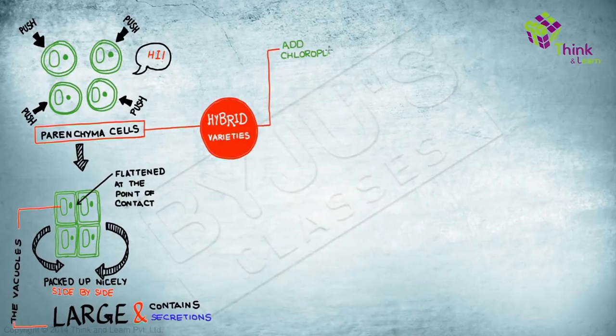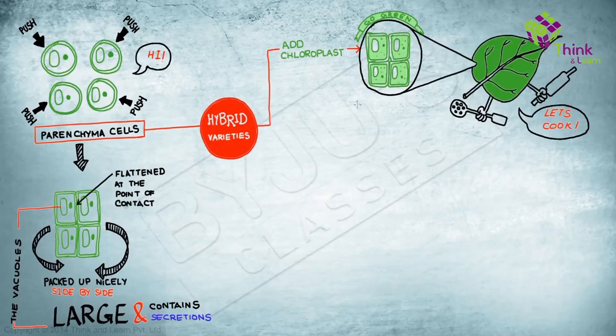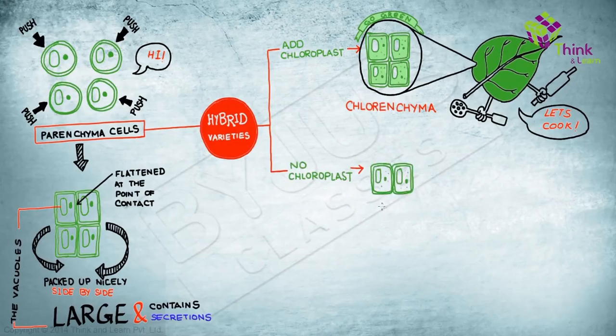Pop a chloroplast into them, not only will it give a nice green color to the cell, but even more importantly, the cell can now carry out the process, the wonderful process of photosynthesis. What are these cells called? Chlorenchyma. Now, if the parenchyma cells don't have chloroplasts, they won't be green obviously and they won't aid in photosynthesis too,